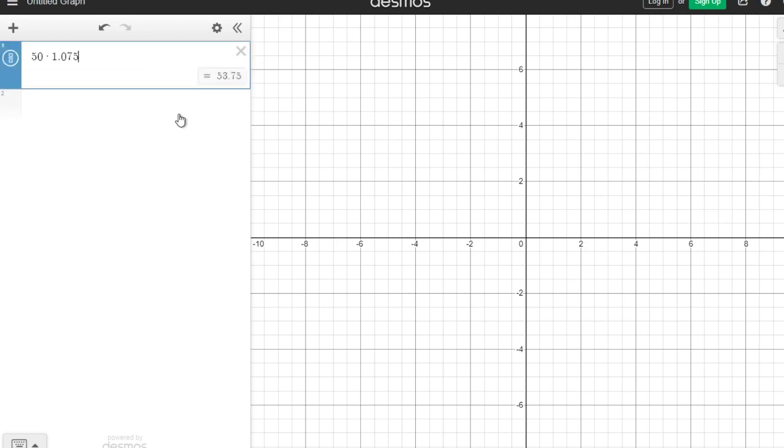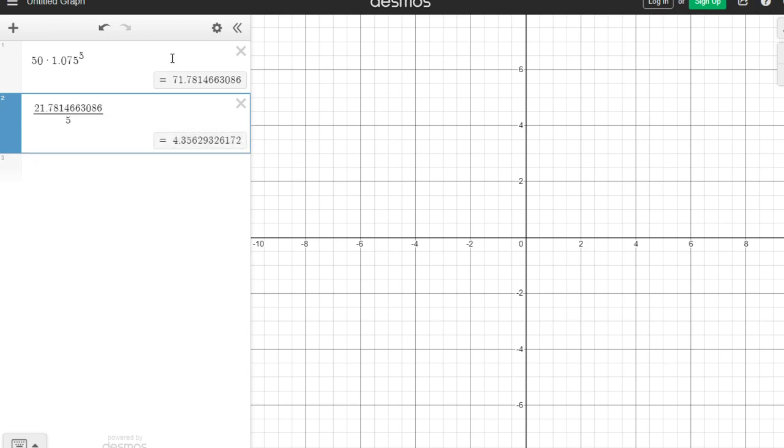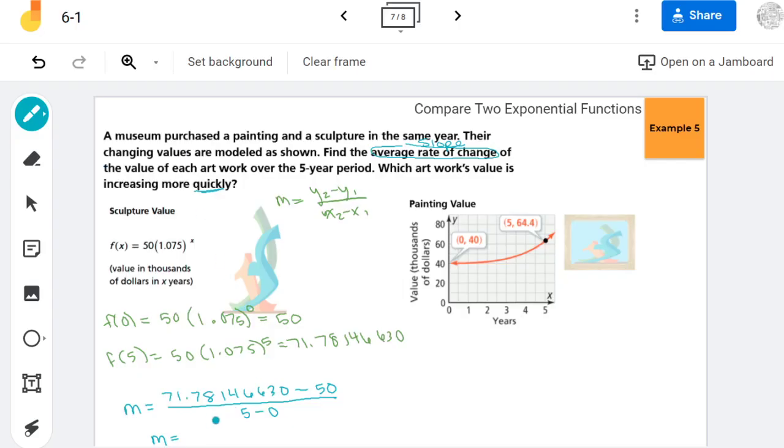I'm going to just do that subtraction right away and just call this 21.7814663086. And then downstairs, we had that 5 minus 0, which is 5. So in this case, our slope is 4.3529. Now that we've done that part, that's the most pain in the neck part here.